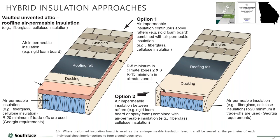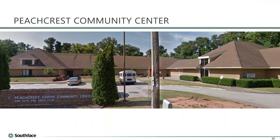One option is to spray about an inch of closed-cell foam — which gives roughly R-6 — and then come back with an R-30 batt underneath. You're now close to hitting the prescriptive code while getting the best of all worlds: the spray foam acts as the condensation break and the batt provides most of the R-value.